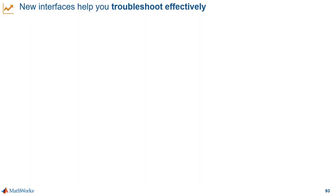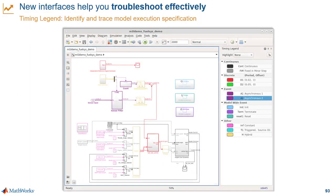Another effective tool for debugging and troubleshooting is the new timing legend, which is the new version of what we used to call the sample time legend. This interface update makes it easier to see and understand where the different sample times originate in your model. You have the ability to focus on just the blocks that introduce a specific sample time, and the interface lets you highlight specific sample times in the model — for example, highlighting all the discrete blocks. Timing legend is a really useful feature when troubleshooting multi-rate models.